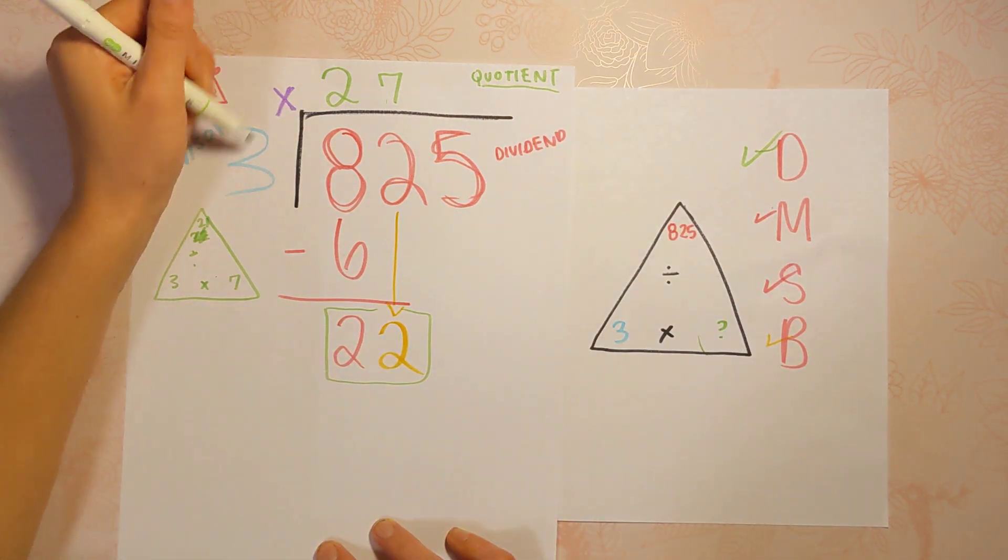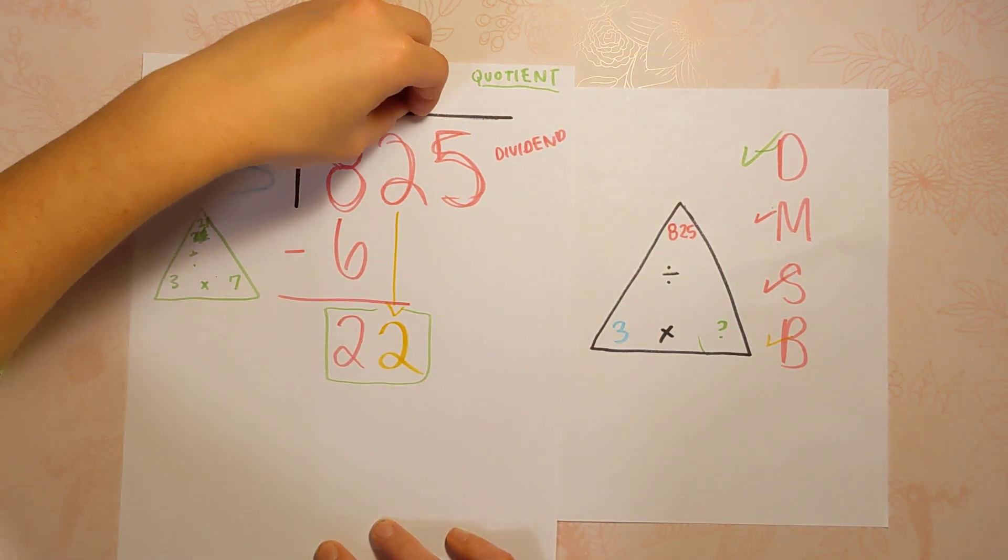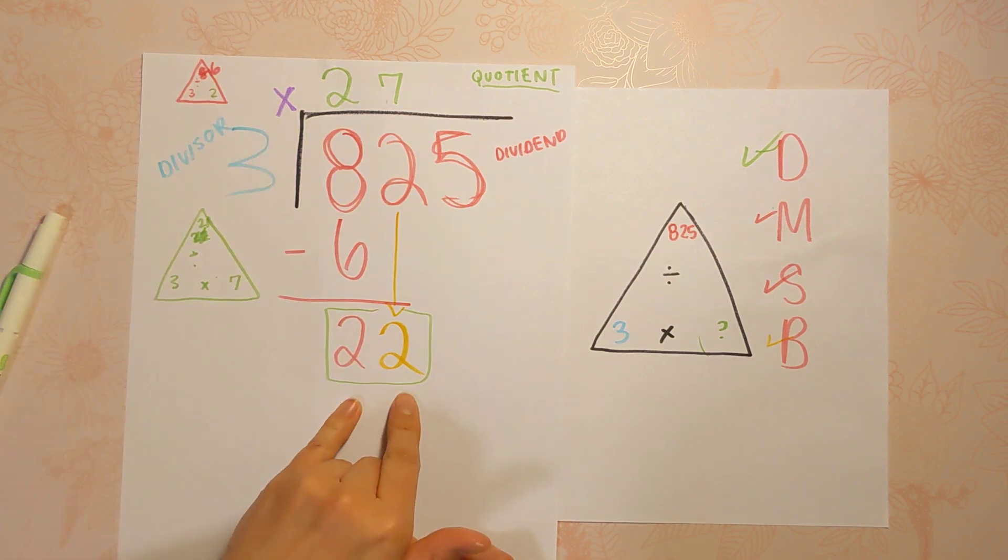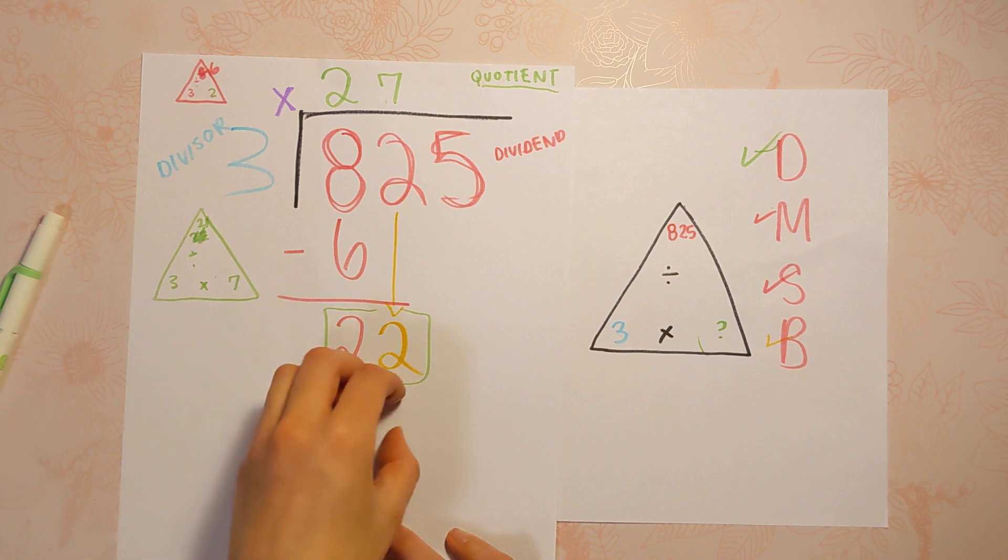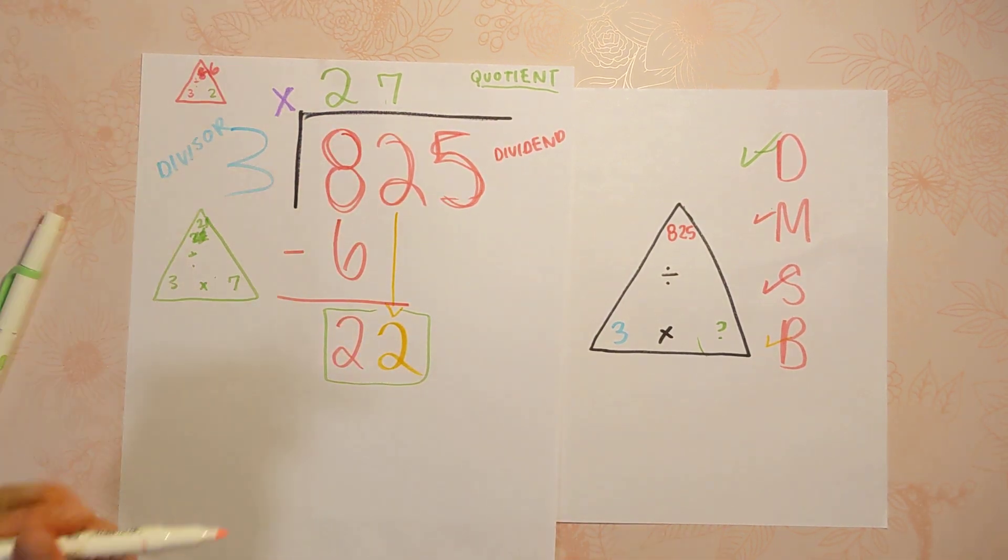Now we're going to multiply. There's our multiplication right there. Now we're going to do 7 times 3 and put it down here because we still have leftover. If we're not hitting it perfectly, we're always going to have a remainder we're working with. So 7 times 3 is 21.